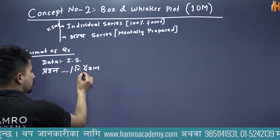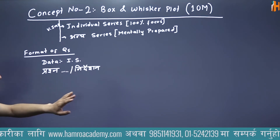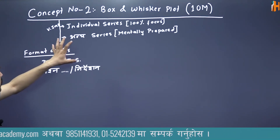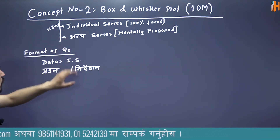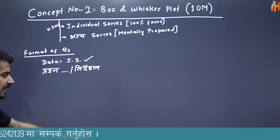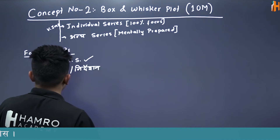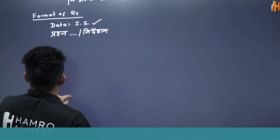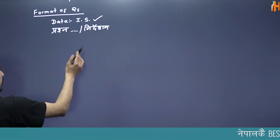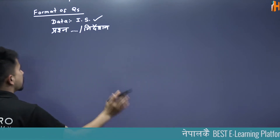आमिले यो question को प्रश्न अरू निर्देशनसँग मतलब छैन। यदि question box and whisker plot को हो र question मा individual series छ भने, चुप लागेर तीनटै step गर्नुहोस्। के के गर्नुपर्छ? यदि continuous series भयो भने त्यो पनि बताइदिन्छु।